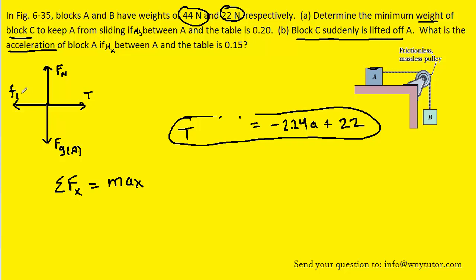So we have to replace that with F sub K. F sub K is the product of the coefficient of kinetic friction and normal force. So let's replace this term right here. Notice that the normal force will be equal to the force of gravity on block A.